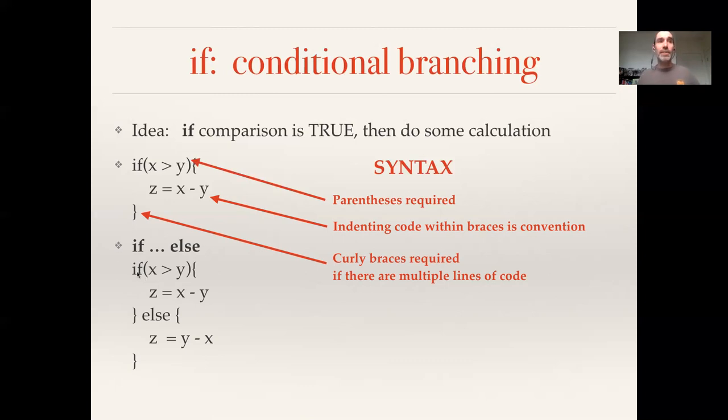And so we have what we had before. If x is greater than y, then I calculate z is x minus y. And here I can have an else. So if this is false, then I run what's in the else. So the if part I run if it's true, the else part is what I do if it's false. So in this case, I'm going to calculate y minus x if it's false.